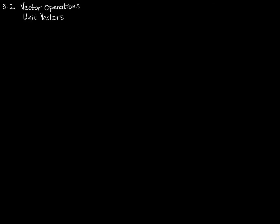A unit vector is just a vector whose length, whose magnitude, is 1. For example, if I have a vector v equals 1, 2, then the magnitude of vector v is the square root of 1 squared plus 2 squared, which is the square root of 5.